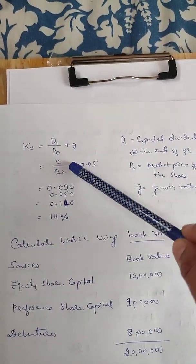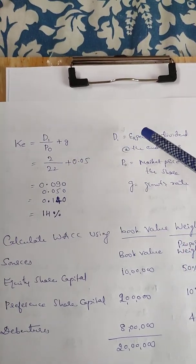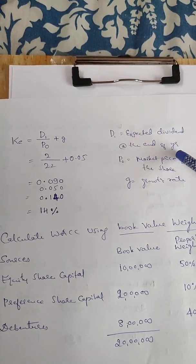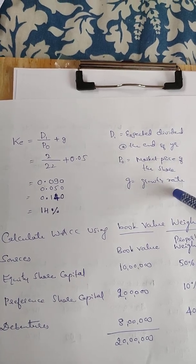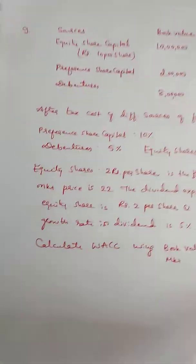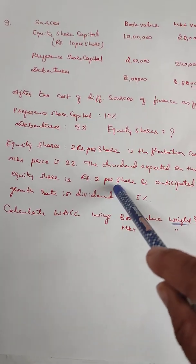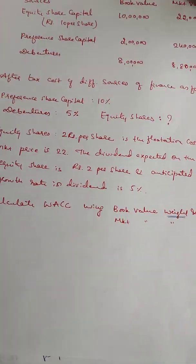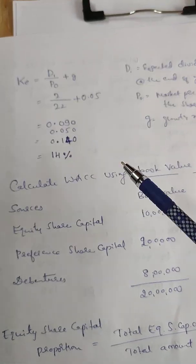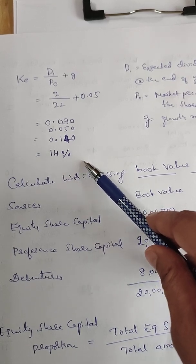First, note the cost of equity. Cost of equity K_E is equal to D1 divided by P naught plus G. D1 here is the expected dividend at the end of the year, P naught is the market price of the share, and G is the growth rate. In the problem, the dividend expected on the equity share is rupees 2, market price is 22, and growth rate is 5%.